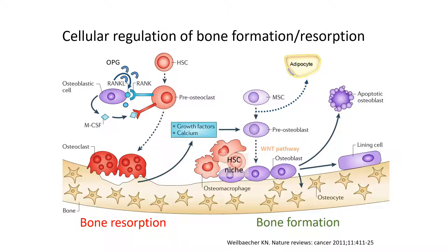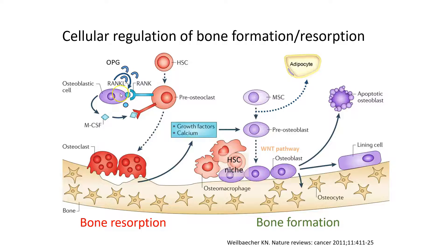Shown more simply: mesenchymal stem cells share a common progenitor that gives rise to pre-osteoblasts or adipocytes. Osteoblasts mature using the Wnt pathway and eventually become lining cells or osteocytes. Osteoblasts are intimately involved in forming and maintaining the osteoblastic niche where hematopoietic stem cells reside. Hematopoietic stem cells lead to osteoclasts, which are involved in bone resorption. Signaling between osteoclasts and osteoblasts occurs through RANK, RANK ligand, and OPG.